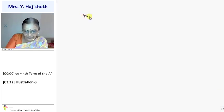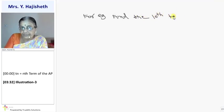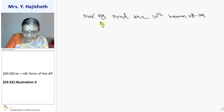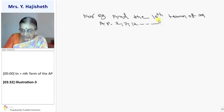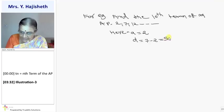For example, jo main example de raha hun, wohi type ke examples you find in 5.2. Find the 10th term of an AP. What is the AP? AP is given as 2, 7, 12, and so on. So first we find out here A is 2, and D is 7 minus 2, so 5. Clear?